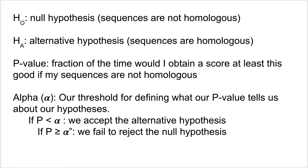The other term to recall is alpha, which is the threshold used for defining what the p-value tells us about the hypotheses. If your p is less than alpha, that means you accept the alternative hypothesis. A common value for alpha is 0.05, so if you had a p-value of 0.01, you would accept the alternative hypothesis — in other words, you would say your sequences are homologous.